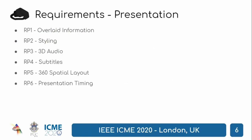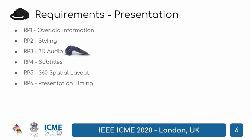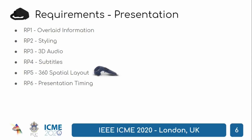Based on the scenarios described, we gathered these requirements regarding presentation. Overlaid information: additional media objects might be positioned in the 360 environment. Styling: different media elements may share the same position and presentation characteristics, so the author should be able to reuse the same style in different elements. 3D audio: audio should be delivered differently to the user based on head motion. Subtitles: both world-referenced and fixed to the user. 3D spatial layout: media elements should use a 360-based coordinate system. And presentation time: media elements should be synchronized with the 360 video.